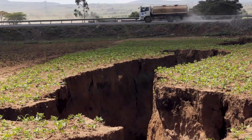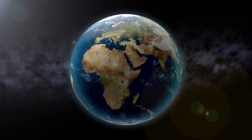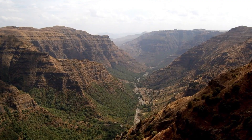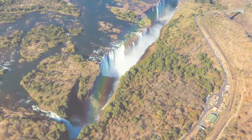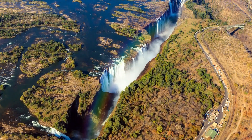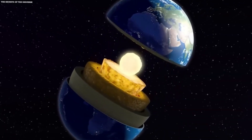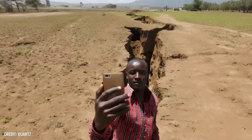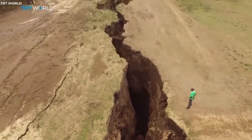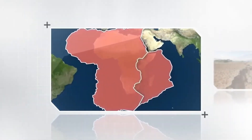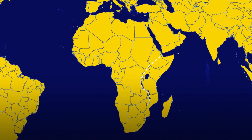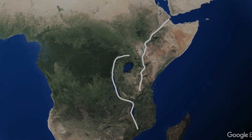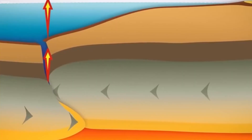The East African Rift is a hub of volcanic and seismic activity, driven by the underlying movement of tectonic plates. The rift's volcanism and earthquakes are not just byproducts of its formation, but also key indicators of the dynamic processes shaping the region. The rift hosts some of the most iconic and active volcanoes in Africa, including Mount Kilimanjaro in Tanzania — the tallest mountain in Africa and a dormant stratovolcano — and Mount Kenya, a dormant volcano and the second highest peak in Africa. Volcanic eruptions are a testament to the movement of magma beneath the Earth's crust, contributing to the thinning and splitting of the lithosphere.